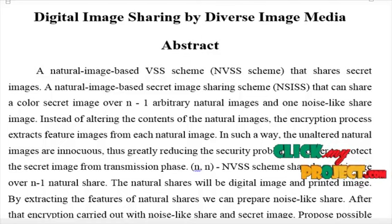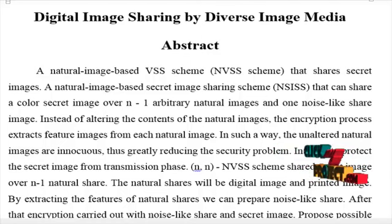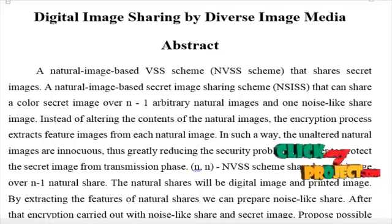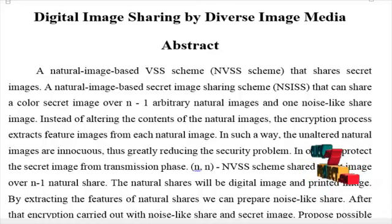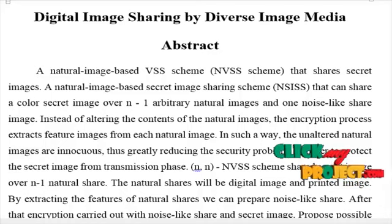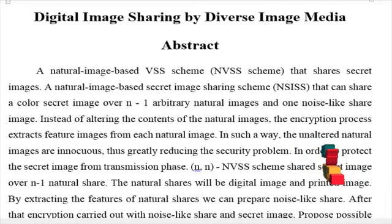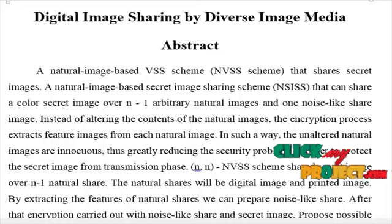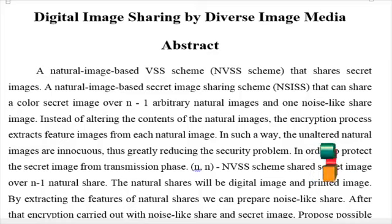The N,N NVS scheme shares the secret image over n-1 natural shares. Natural shares can be digital images and printed images. By extracting the features of natural shares, we can prepare a noise-like share. After that, encryption is carried out with the noise-like share and the secret image, with proposed ways to hide the noise-like share to reduce the transmission risk problem.